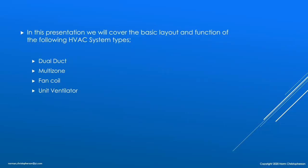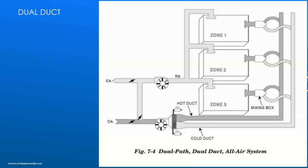In this lesson we will get an overview of the next four HVAC system types. Those are dual duct, multi-zone, fan coil, and unit ventilators.